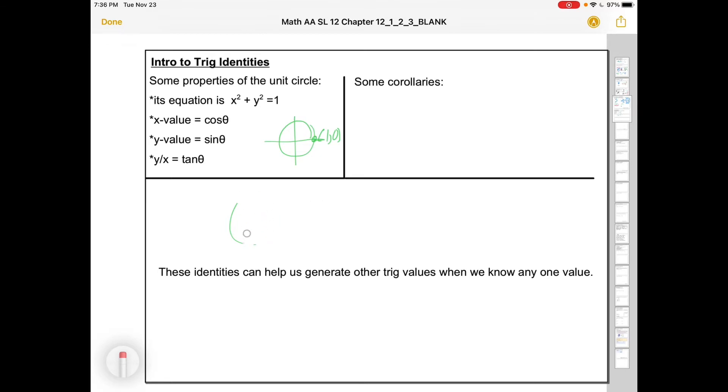And then once we have all that, the x value on the unit circle we know is going to be cosine, the y value is going to be sine, and y over x is tan.